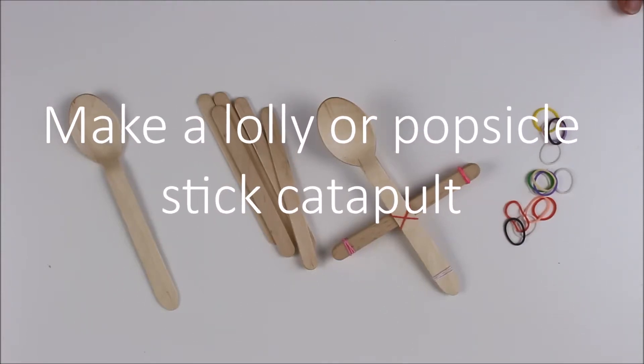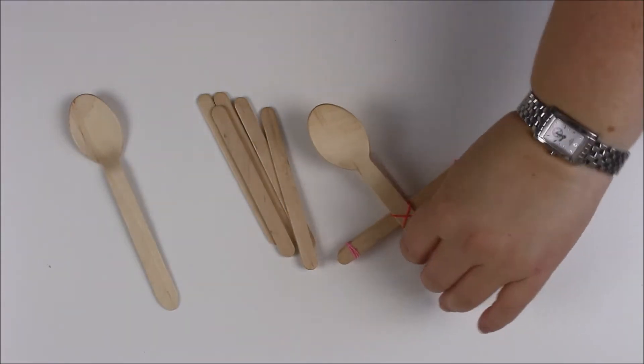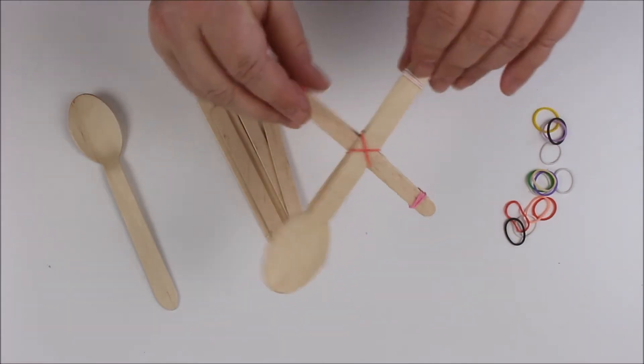Hi, it's Gem from Mum in the Madhouse and today we're going to make a wooden spoon and popsicle lolly stick catapult just like this.